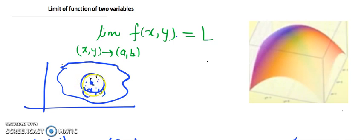So (x,y) is getting closer from any direction. When I say it is getting closer from any direction, the output at (a,b) might be L. I can have the output of (x,y) anywhere, it can be moving from any direction.